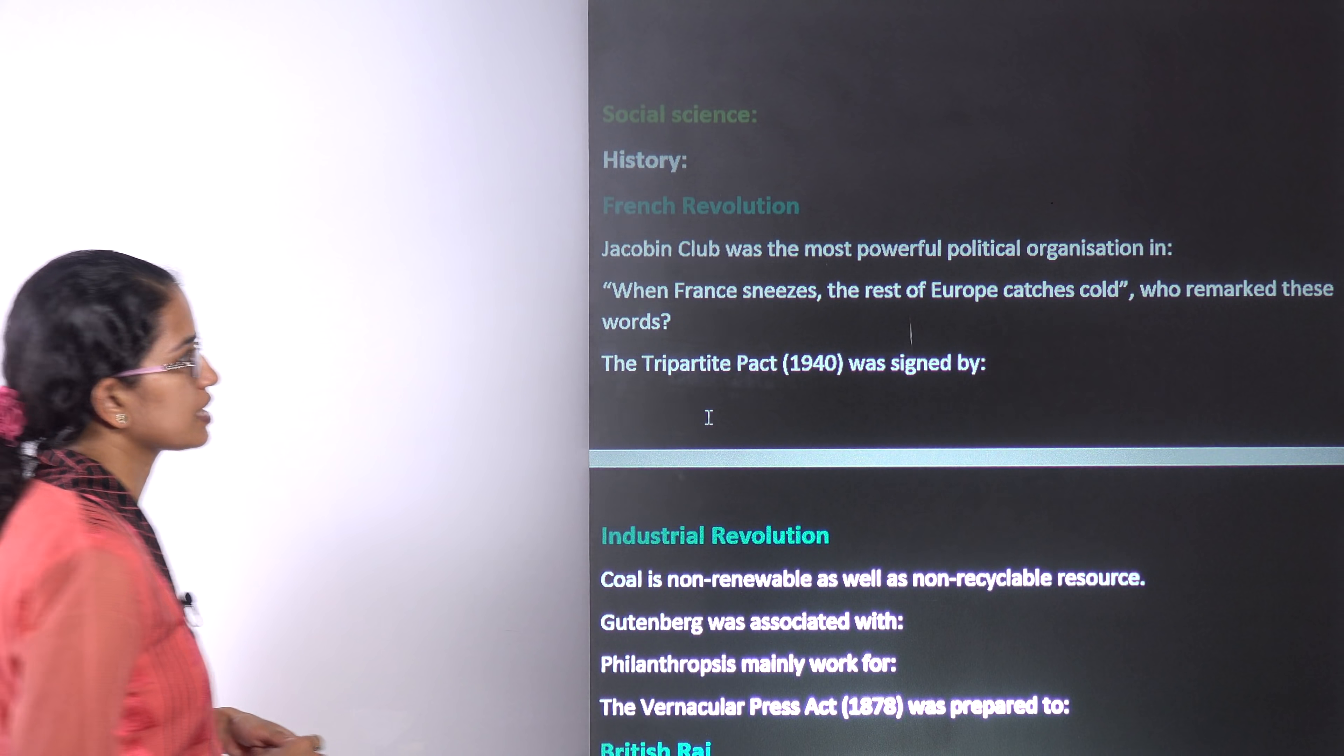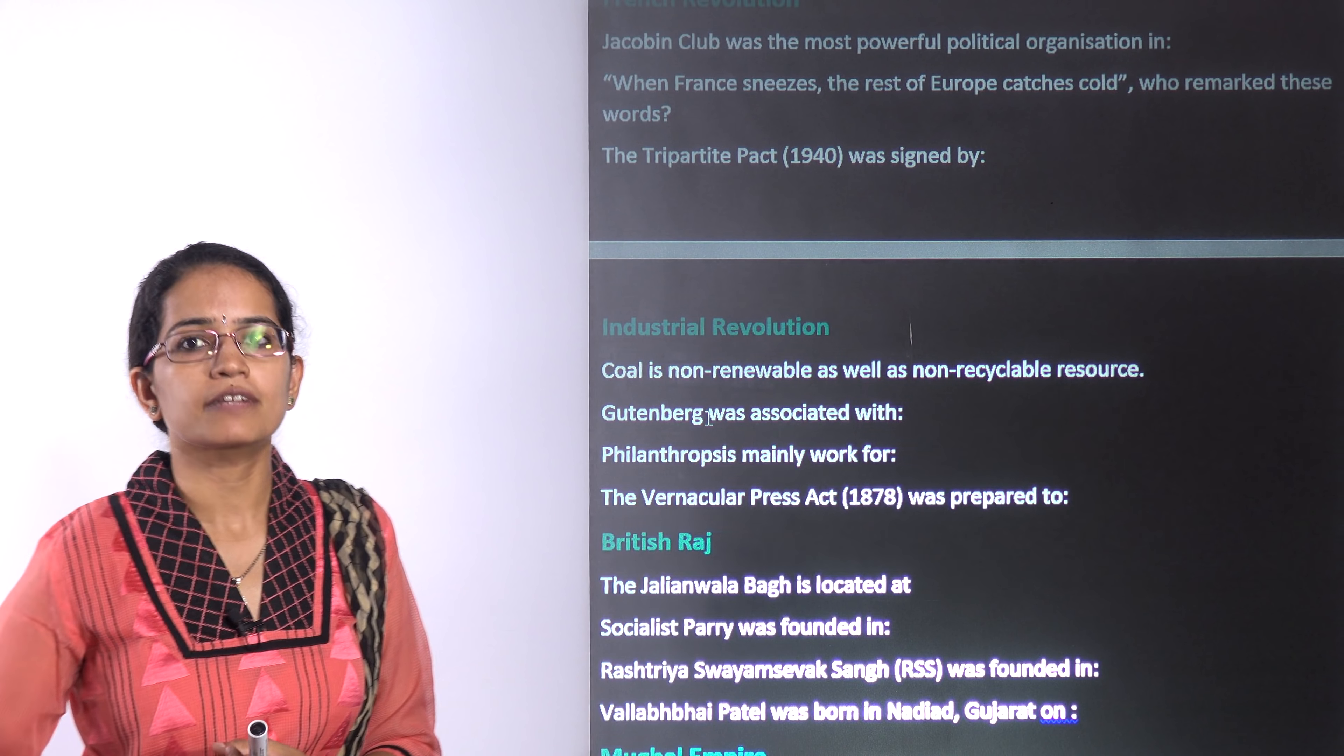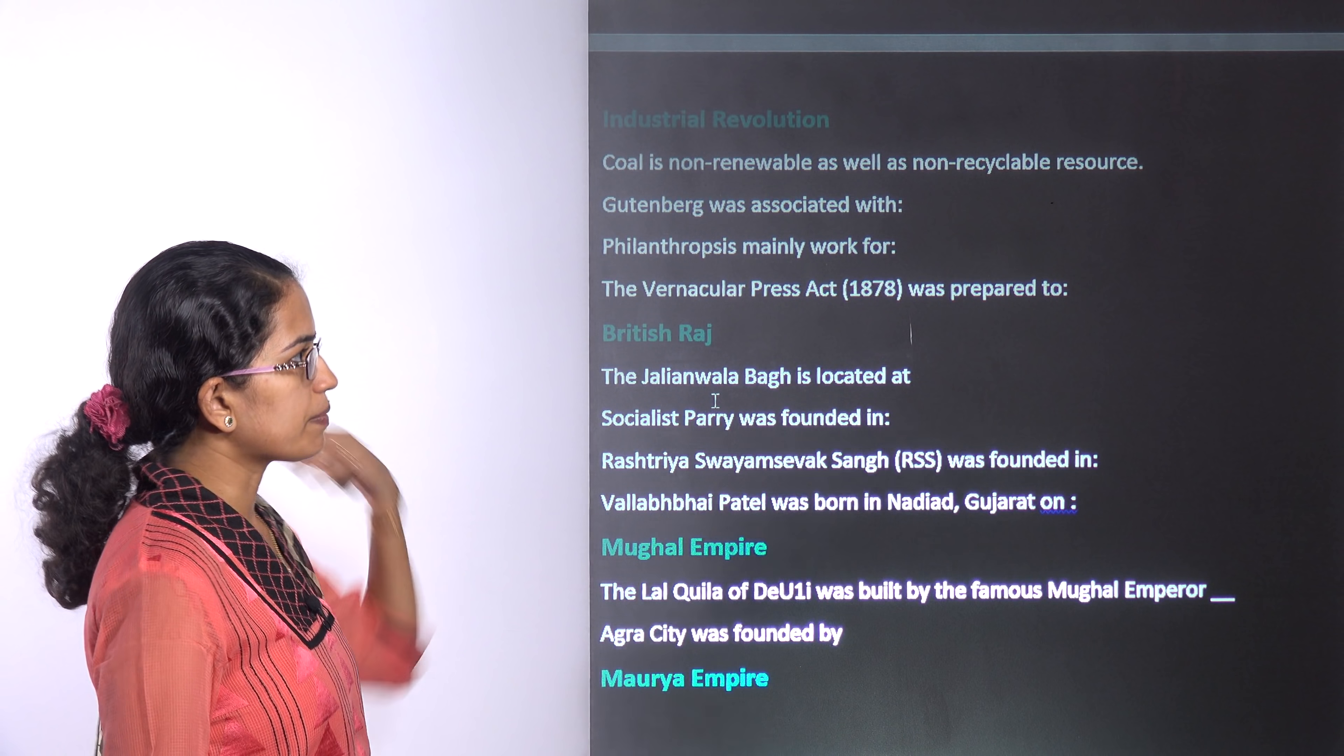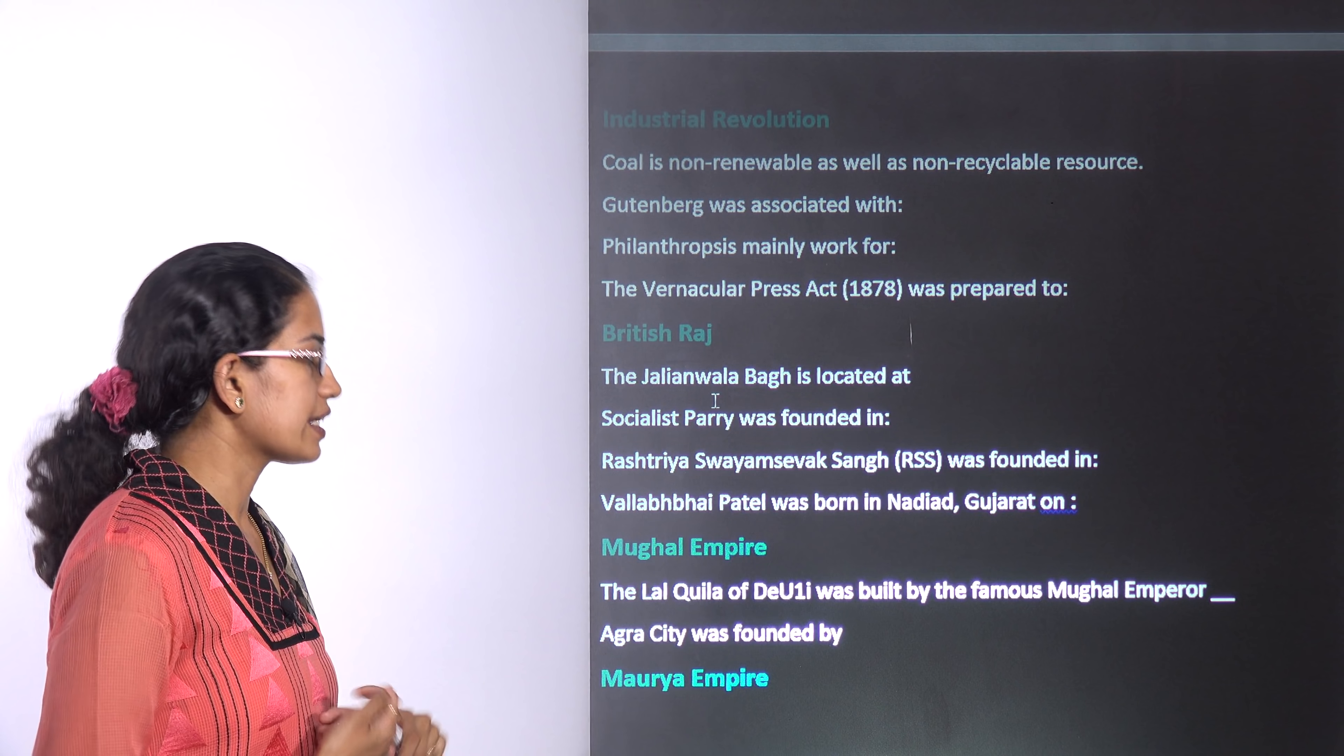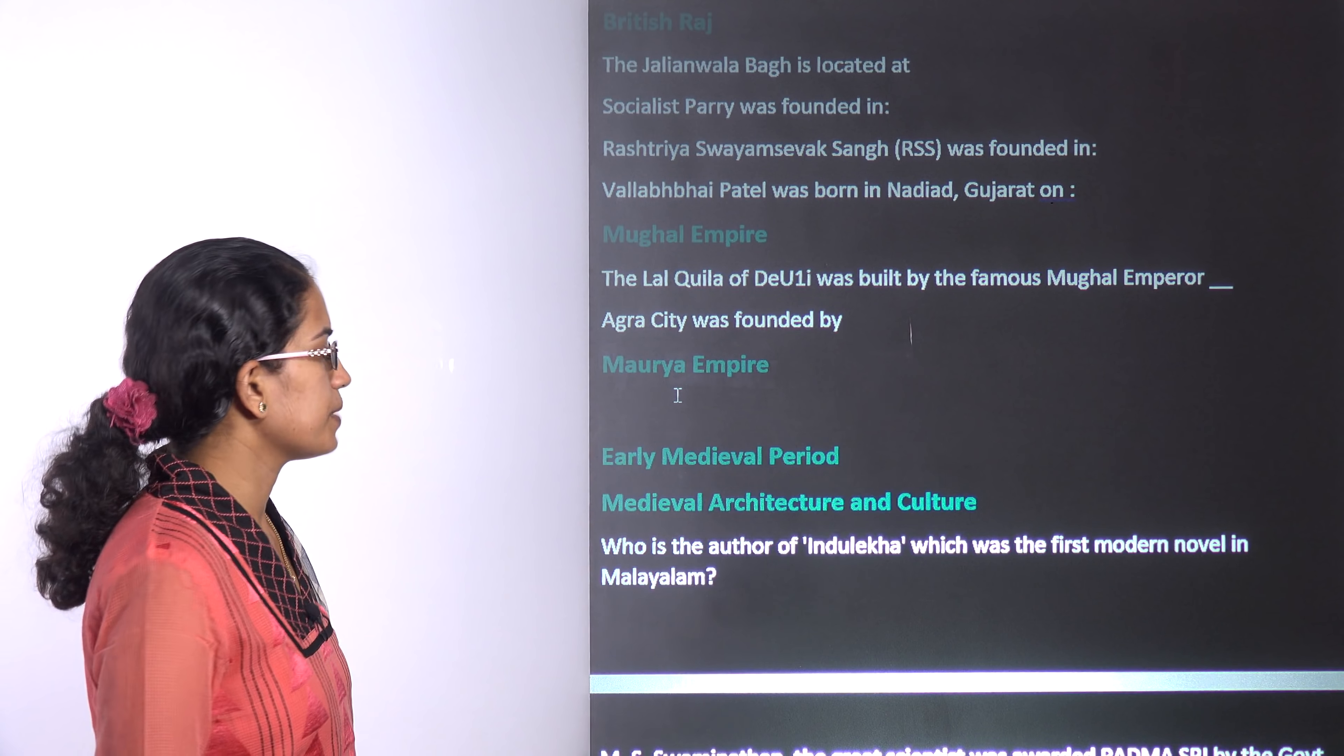When it comes to history, for French Revolution you can be asked about Jacobian clubs, the tripartite pact. Industrial revolution was important - what were the various machines, the spinning wheel who invented it, you have the Gutenberg printing press, vernacular press act was passed, printing how it became important, what was the role of paper. When it comes to independence movement, you have the Khilafat movement, non-cooperation movement, civil disobedience movement, establishment of Swaraj party, then you have the socialist party, RSS being established. This year, you have Sardar Patel, the statue of unity being inaugurated, so that becomes very important. The life of Sardar Vallabhbhai Patel, the developments in the medieval period are again important.